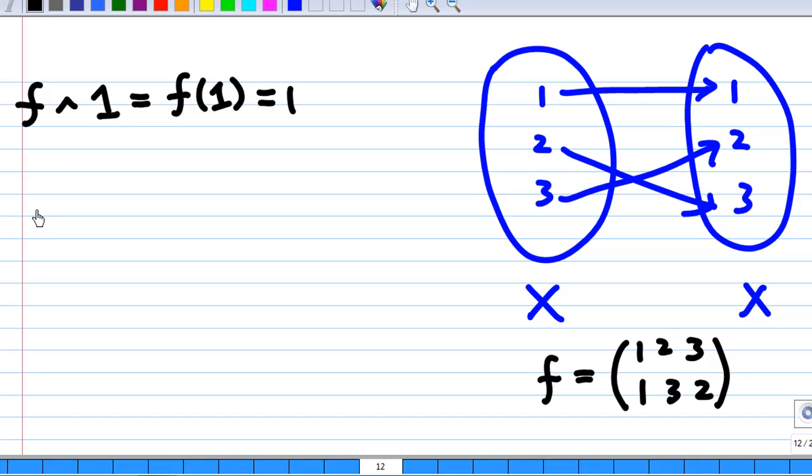How about f acting on 2? When f acts on 2, since f is a mapping from X to X, naturally we will take f at 2 as the image of 2 under f. And the image of 2 under f in this case is equal to 3.